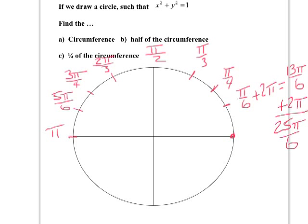The point here is that every point on the unit circle actually has an infinite amount of names. It all just depends on whether we want to talk about going once around the circle to get there, or spinning around the circle several times and then arriving there.